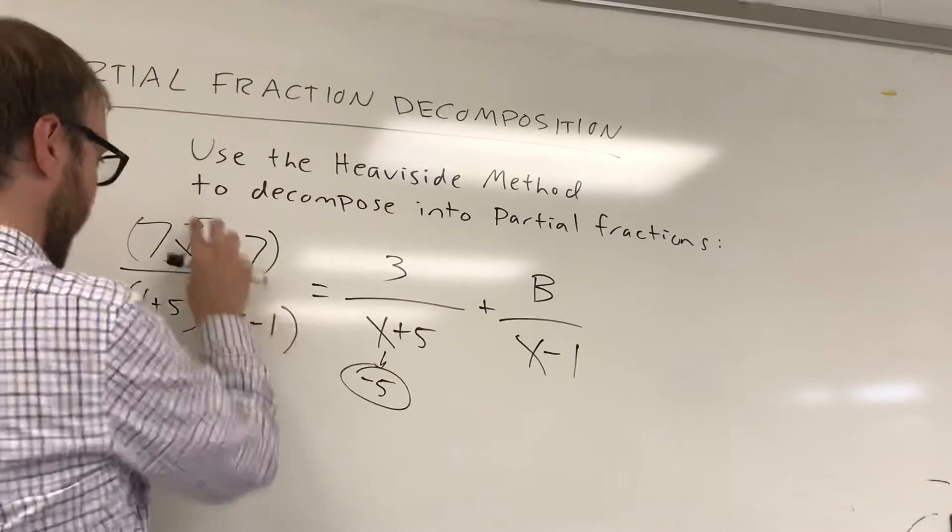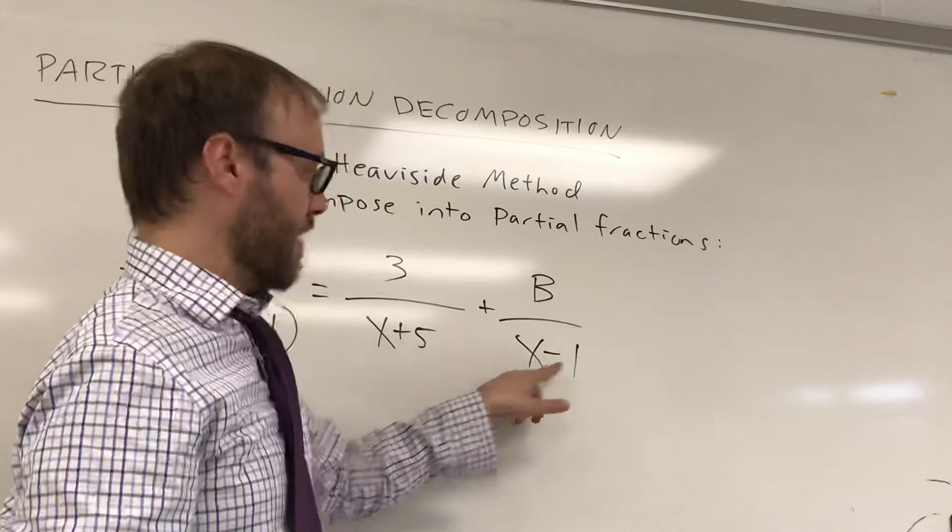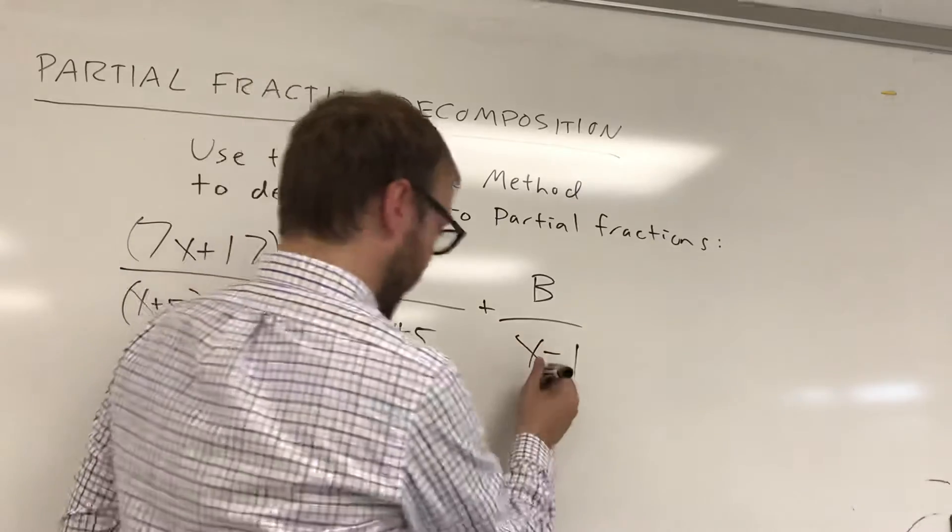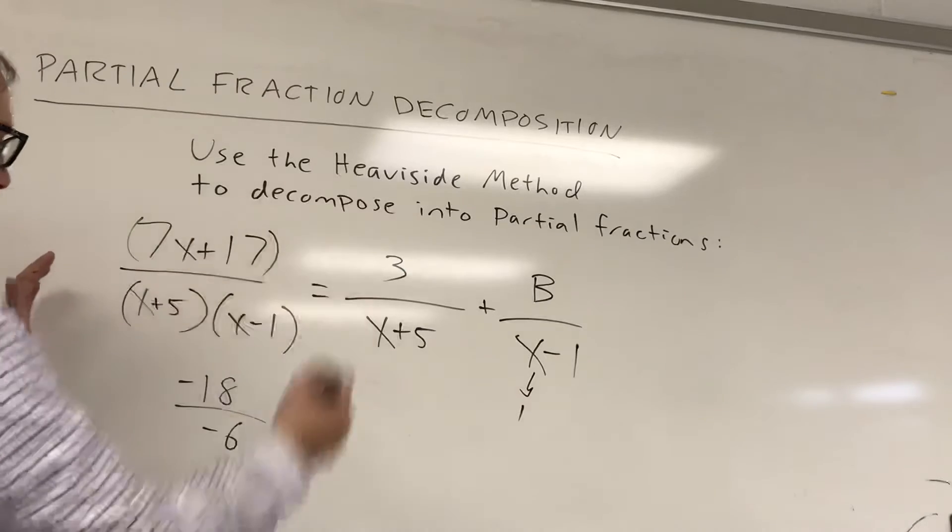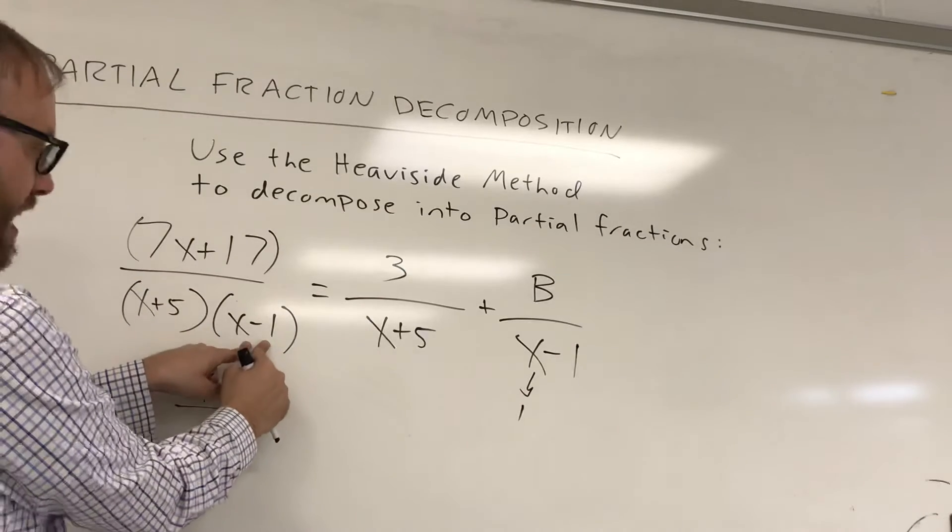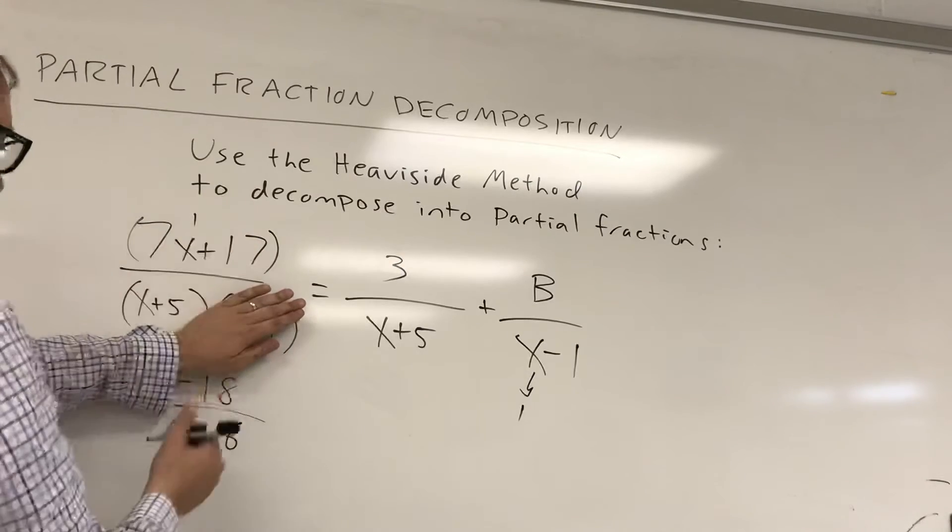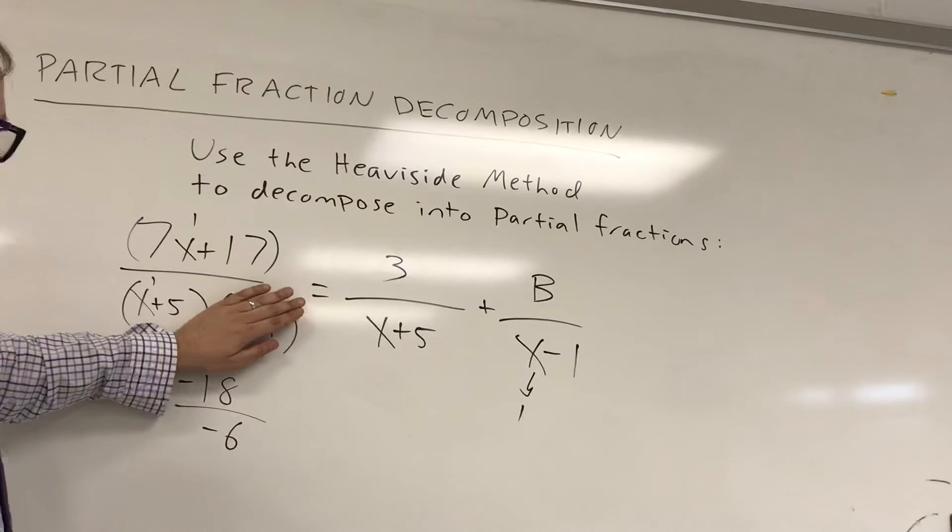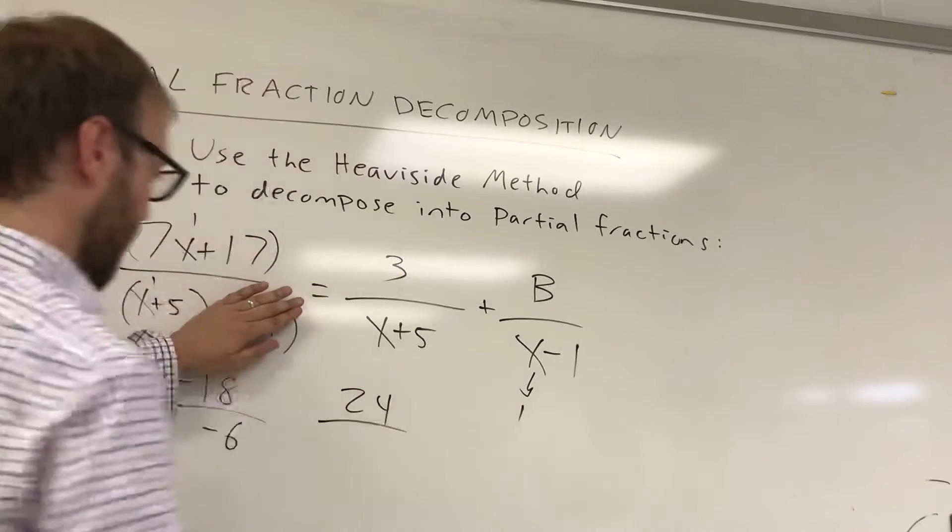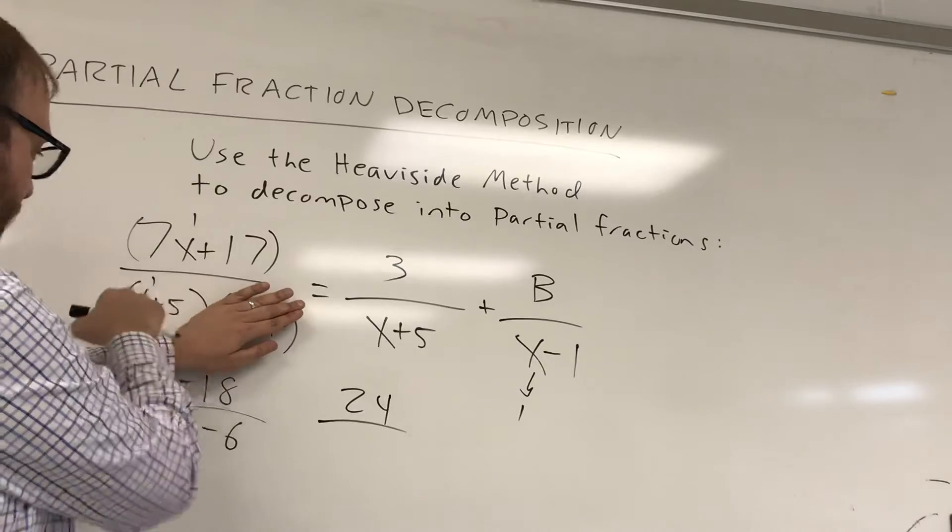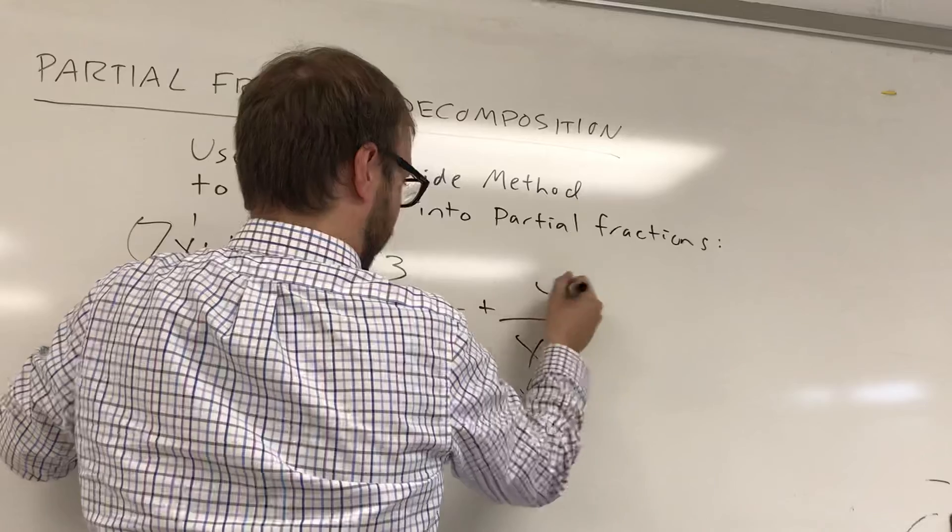And then you can do the same thing with the other fraction. You can go over here and you can say, okay, what would make this denominator 0? Positive 1 would make that denominator 0. And you can come back to this side of the equation. You can't put a 1 in here because if you put a 1 in here, it'll be 0. So you cover that up and you substitute in 1 here and you substitute 1 in here. And notice what happens. You get 7 plus 17, which is 24. And you get 1 plus 5, which is 6. 24 over 6 is equal to 4. And that's your missing value.